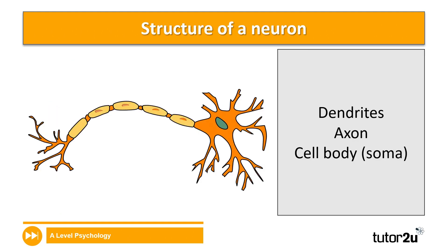When we speak about the structure of a neuron, we're interested in the different parts of a neuron. We're going to have a go at a little activity as an introduction to what a neuron looks like structurally. This activity will be completed in question three in your workbook. I'd like you to add in the diagram of a neuron and see if you can label the three main parts: the dendrites, axon, and the cell body, also known as the soma. You can pause the video, add in the diagram, and label where those three particular parts go.